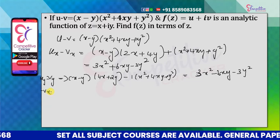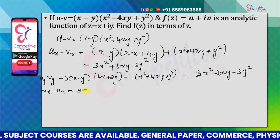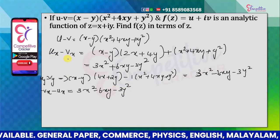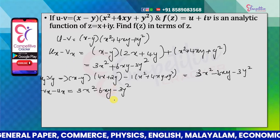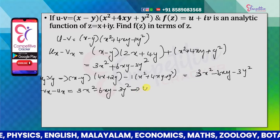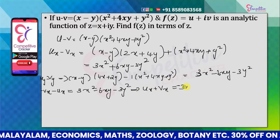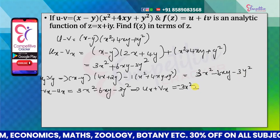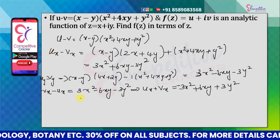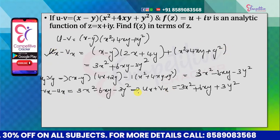Using the Cauchy-Riemann equations: uy equals minus vx and vy equals ux. So we have ux minus vx equal to 3x squared minus 6xy minus 3y squared, and ux plus vx equals minus 3x squared minus 6xy plus 3y squared. Now we note that ux minus vx equals ux plus vx in this setup.